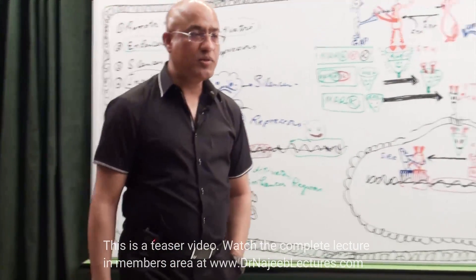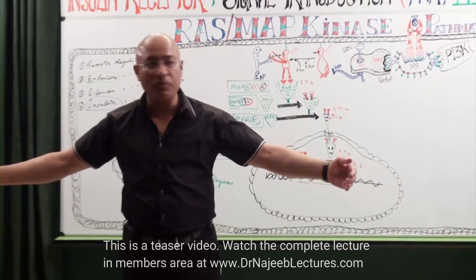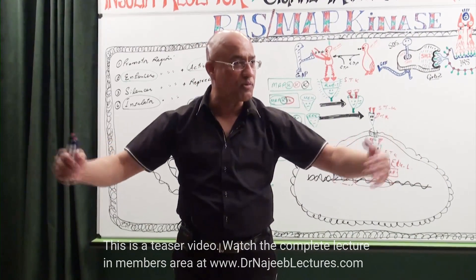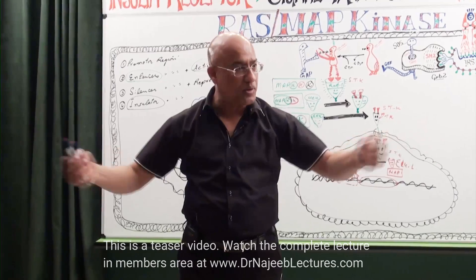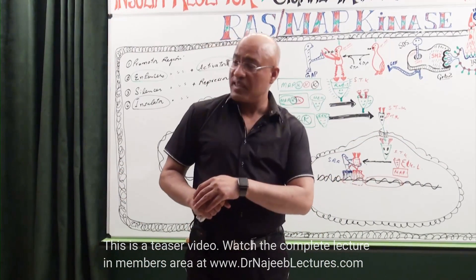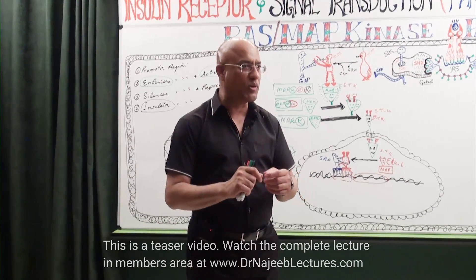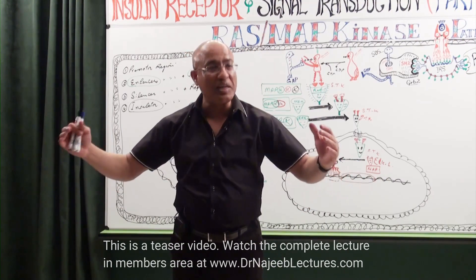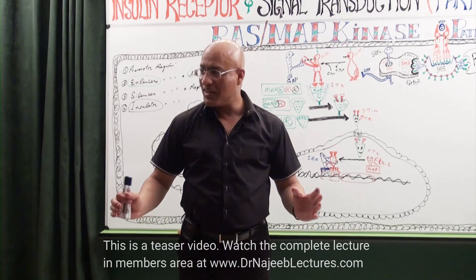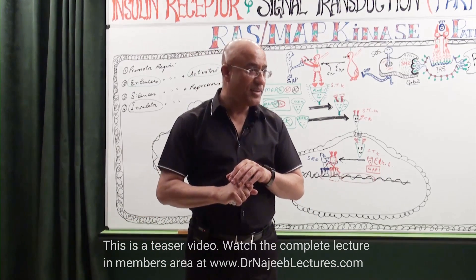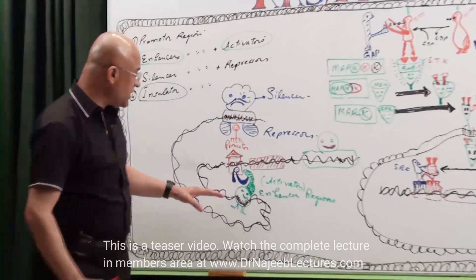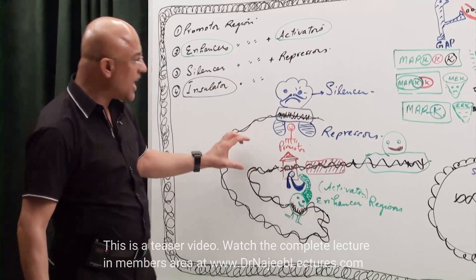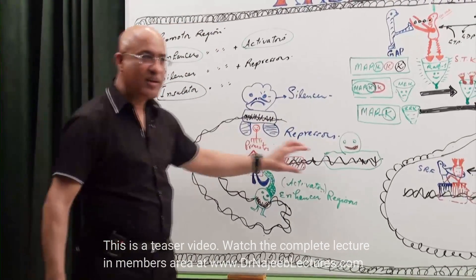Mother protects the father from the influence of the uncle — she isolates her home system. Some DNA regions intervene and plug themselves between the silencer and the promoter, and between the enhancer and the promoter. In the books they call it the insulator, because it isolates. There should not be undue over-activity or under-activity in the relevant gene or promoter region.